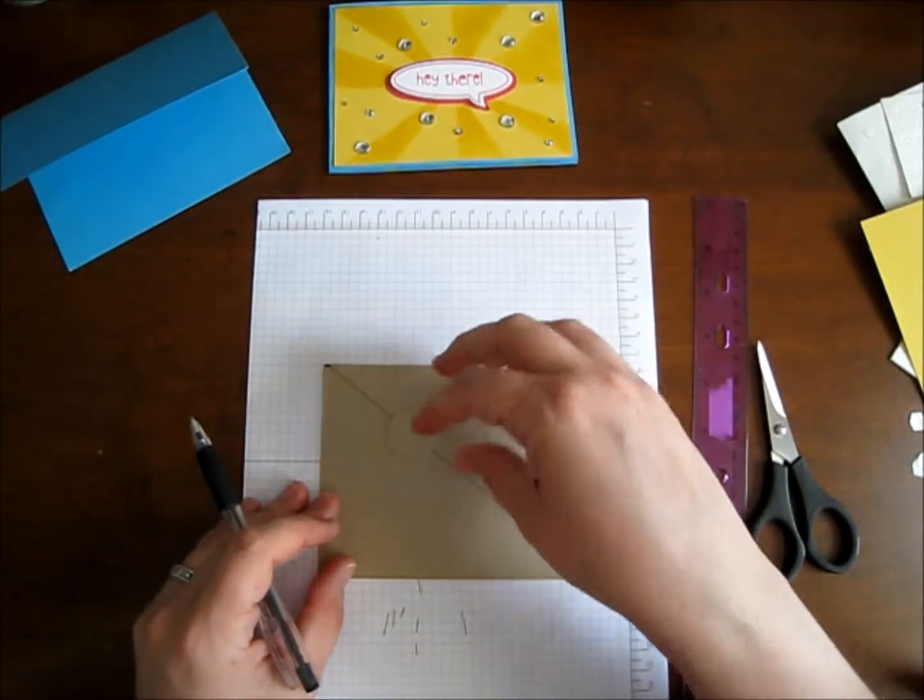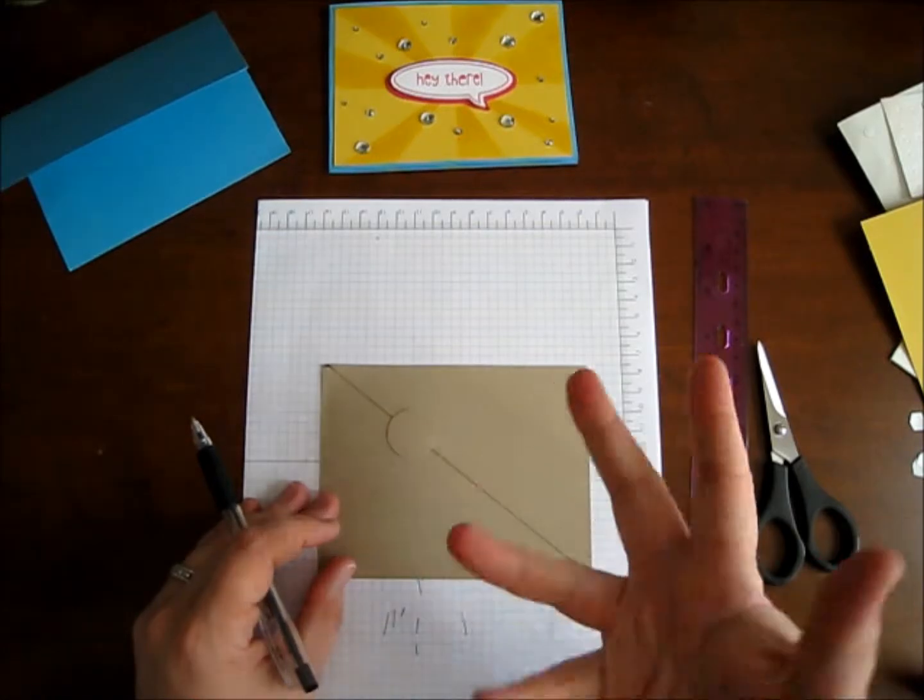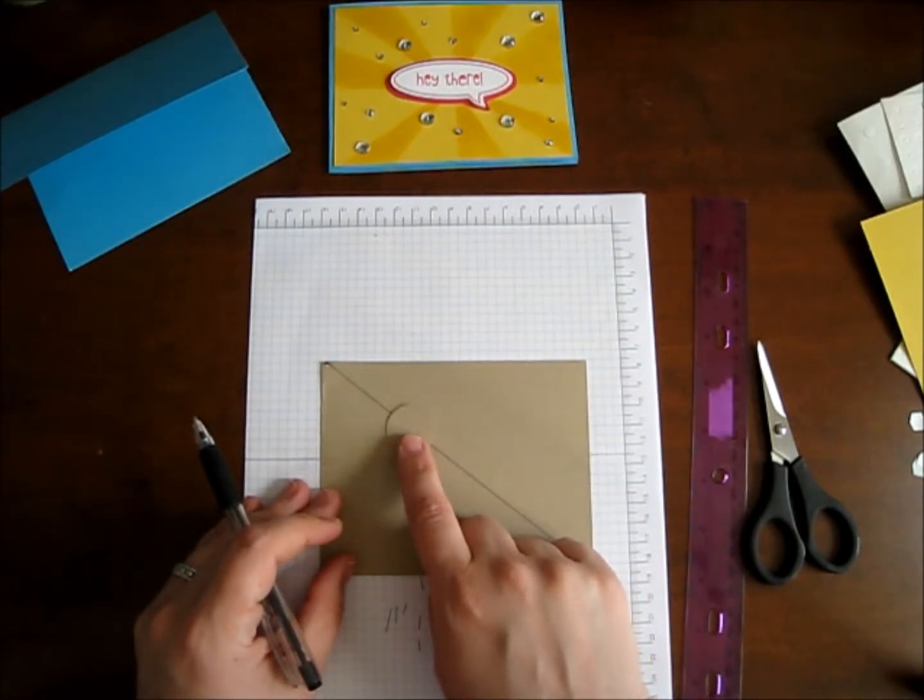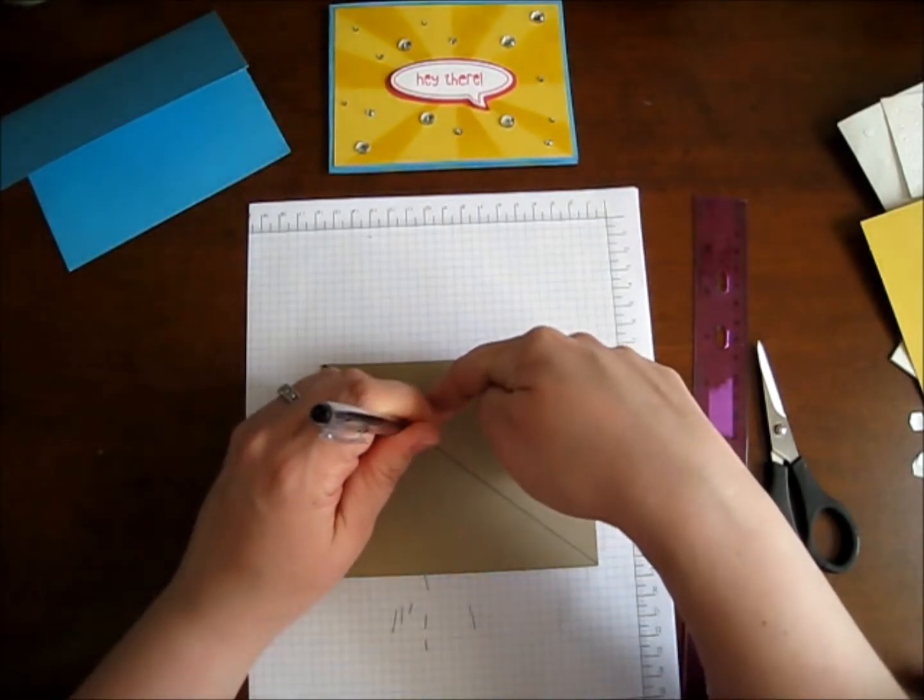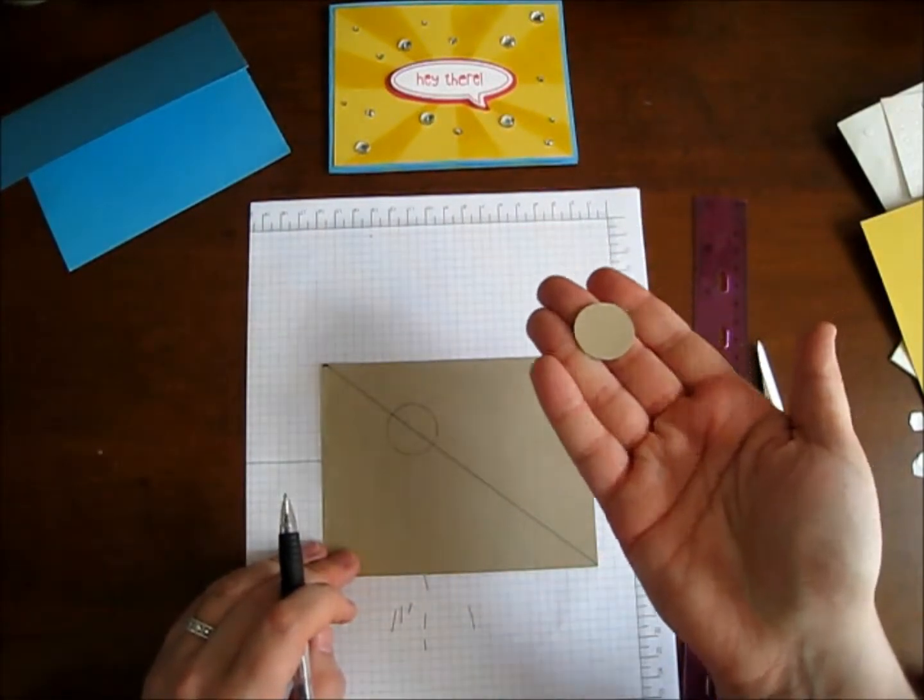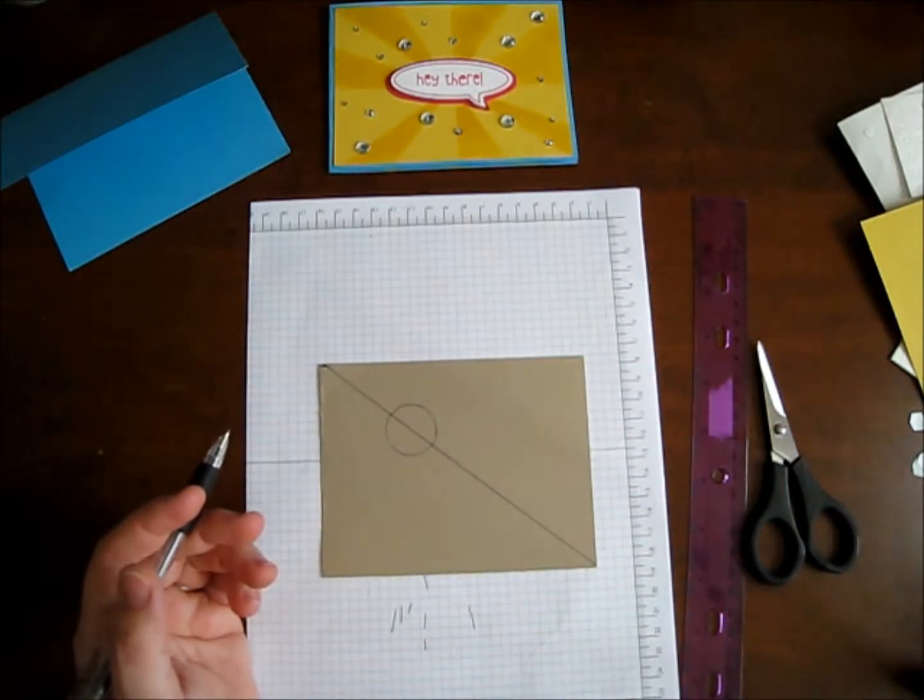So I'm going to go up. I tend to like to have my focal point here and my little greeting on the bottom. I don't usually do it the other way around. I'm not sure why. So I'm going to take my one inch circle and I'm just going to trace. And that's what I mean by scrap is that once you've traced it, we're pretty much done. But that gives you your center for your template.